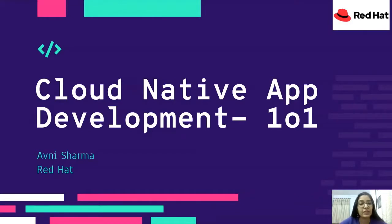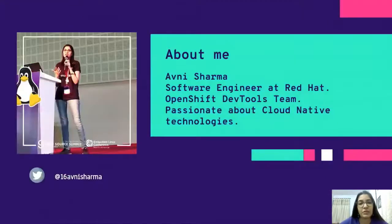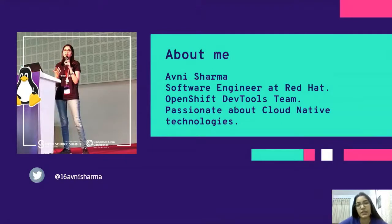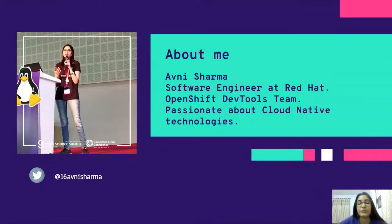Before we dive right into the talk, I would like to introduce myself to the audience. My name is Avni Sharma, and I'm a software engineer at Red Hat. I work in the OpenShift Developer Tools team, and I'm really passionate about cloud native technologies. My Twitter handle is @AvniSharma16 and you all can connect with me on Twitter.